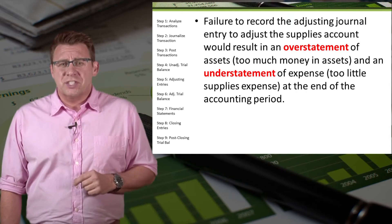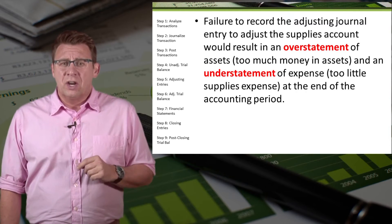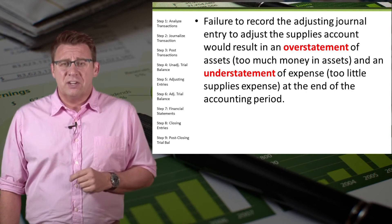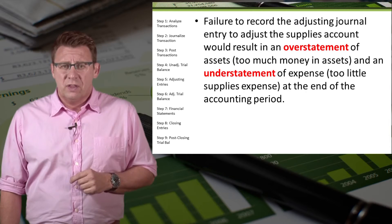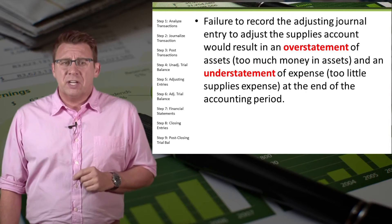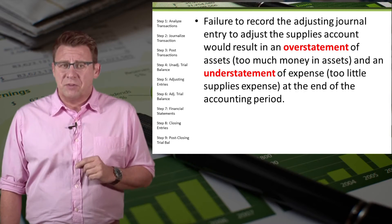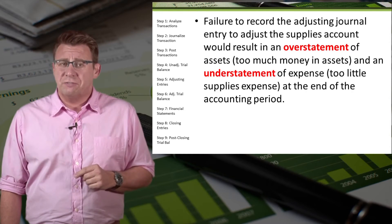Failure to record the adjusting journal entry to adjust the supplies account would result in an overstatement of the asset — we would report too much supplies — and an understatement of the expense — we would report too little supplies expense at the end of the accounting period. Overstatement and understatement are two concepts students tend to struggle with, and they definitely require critical thinking about the transaction to figure out.